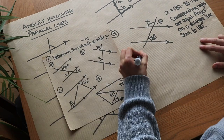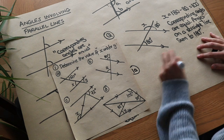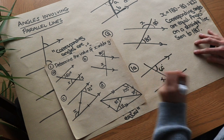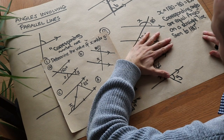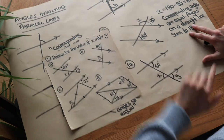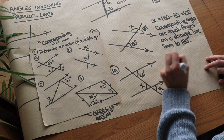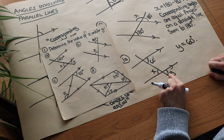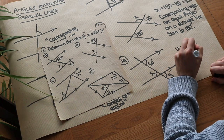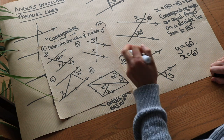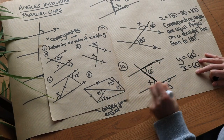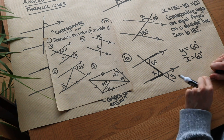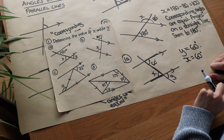Next problem: two parallel lines with a connecting line at 60 degrees; find X and Y. Using corresponding angles — shifting our hand to the other parallel line — Y equals 60 degrees. For X, we can note that X is vertically opposite to Y, so X is also 60 degrees. Alternatively, X and the 60-degree angle are alternate angles forming a Z shape, so X equals 60 degrees either way.